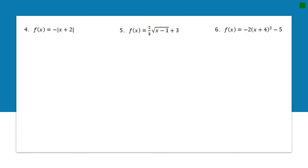For number four, this is the absolute value family because I can see absolute value symbols. I have an a value which is negative, so the graph is going to be reflected. I also have an h value — h is horizontal, so left and right, and it's the opposite — so this is going to be shifted left two.